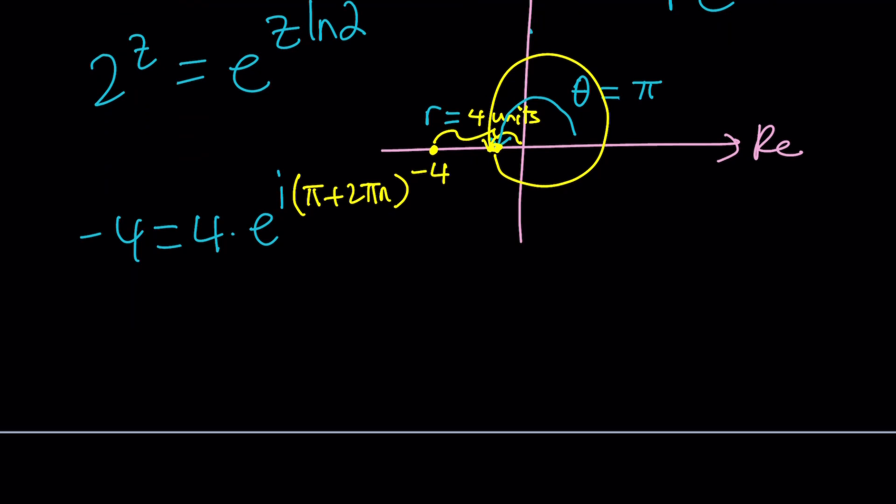Now we're going to put these two things together because they're both e to the power something. Let's do that. e to the power z ln 2 equals 4 times e to the power i times pi plus 2 pi n. Awesome. Here's what we can do. We can go ahead and natural log both sides and ln e is 1 right. So it's going to give us the following. You can also think about the formula for the ln of a complex number.